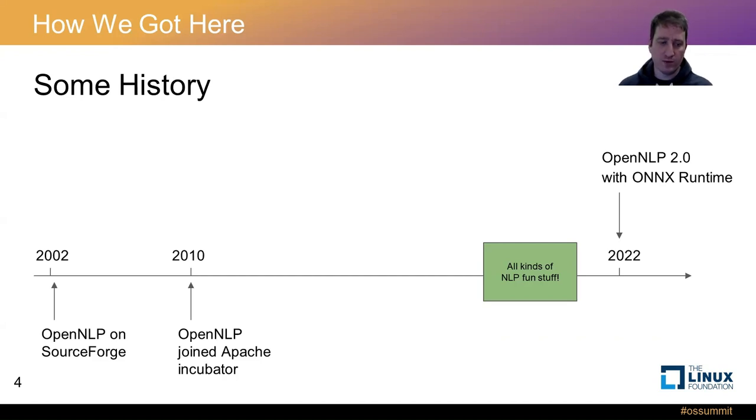OpenNLP was first made available on SourceForge a little over 20 years ago in 2002. In 2010, OpenNLP joined the Apache Software Foundation incubator. In 2017, 18, 19, there was a lot of NLP fun stuff that happened. And then in 2022, OpenNLP 2.0 was released with support for using the Onyx runtime to make use of some of the newer types of NLP models. So OpenNLP has a lengthy history, but it is a solid and trusted NLP framework that's being brought into some of the newer NLP technologies.